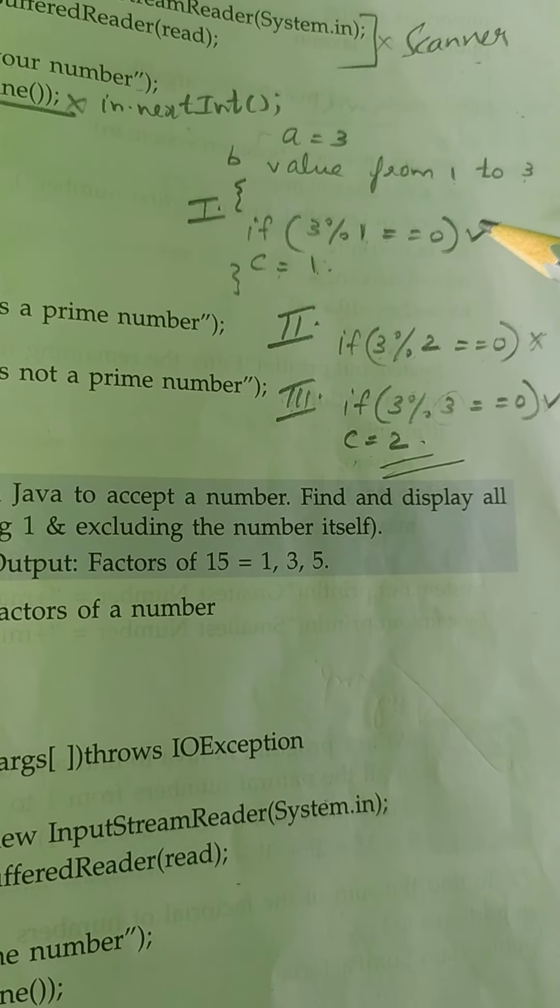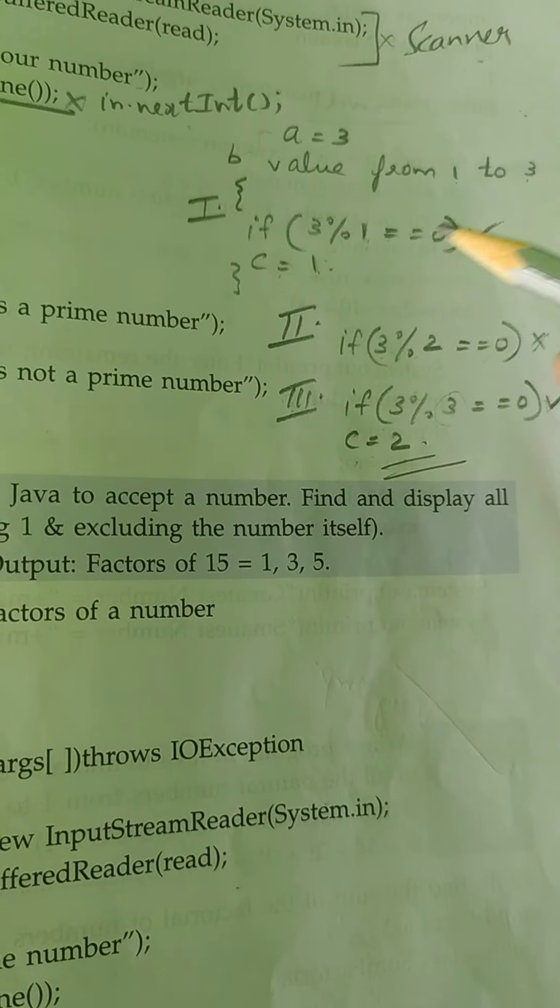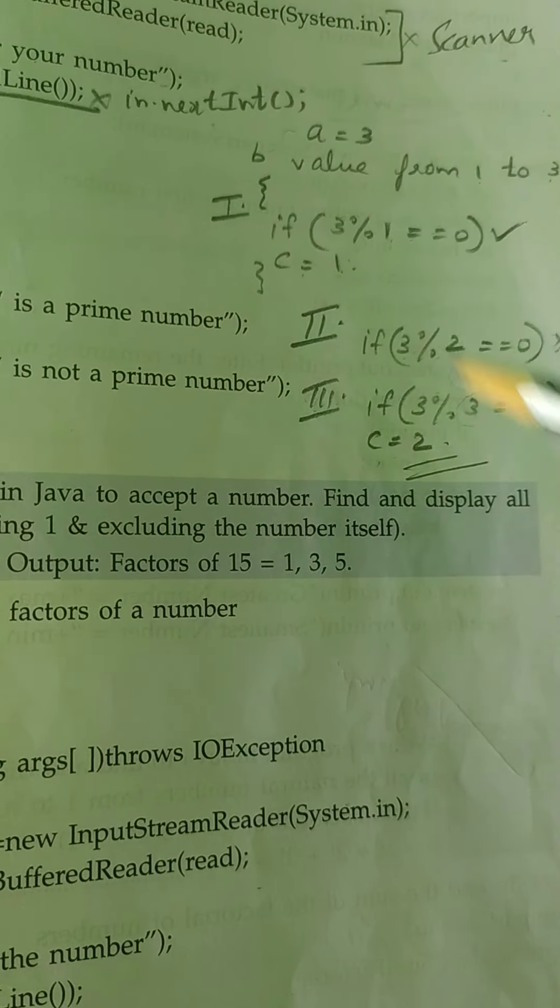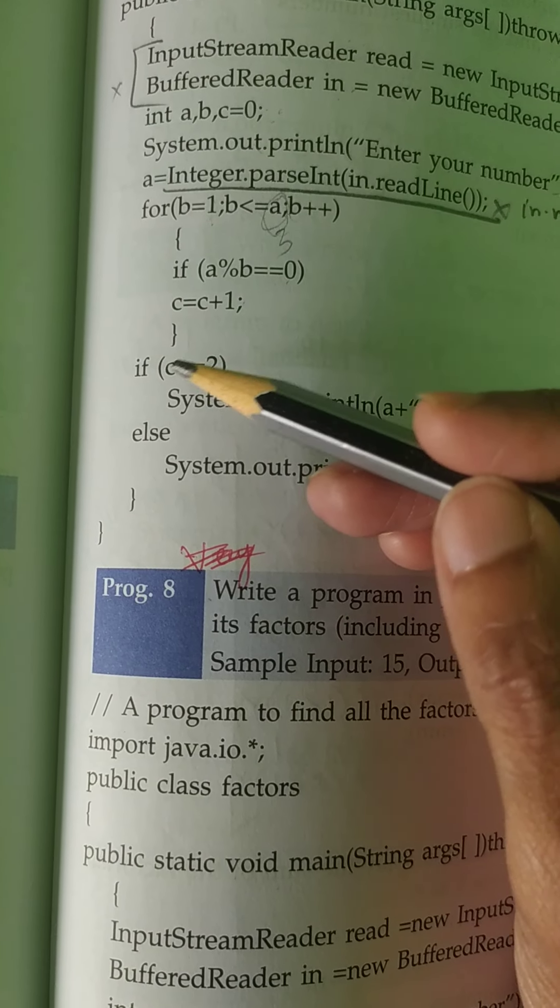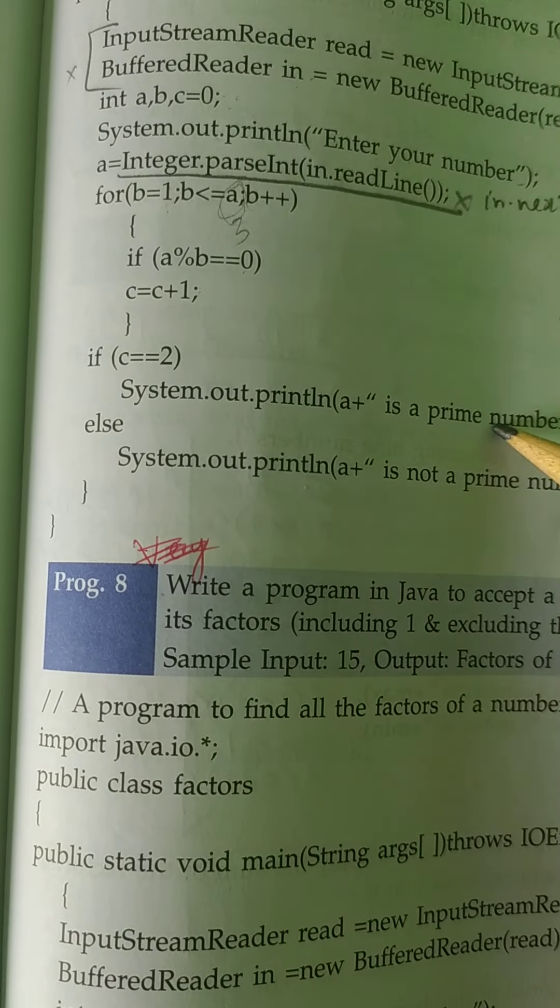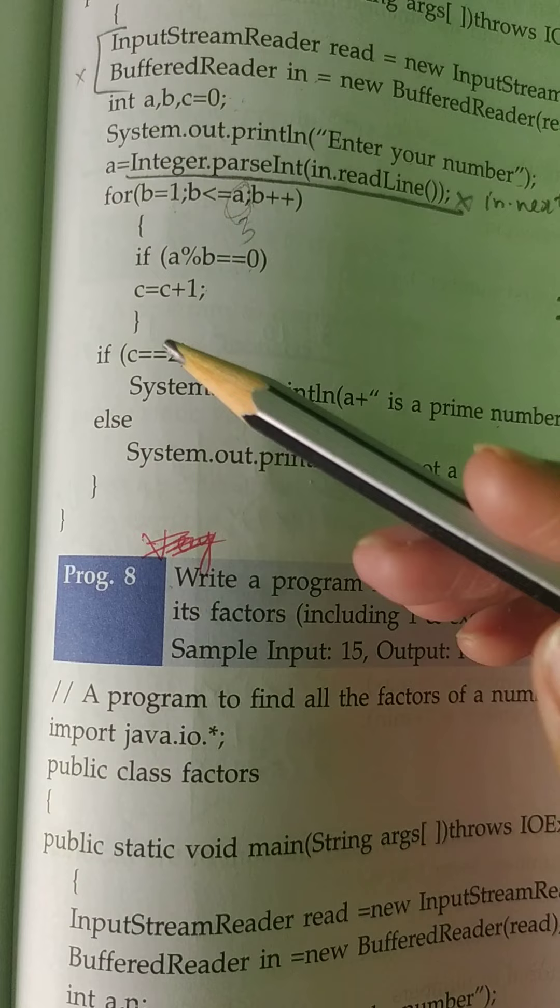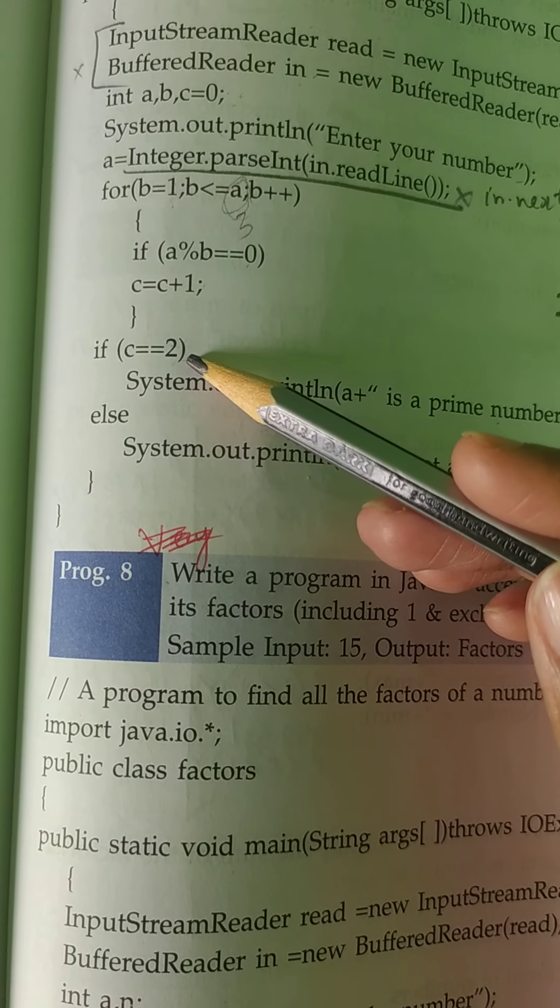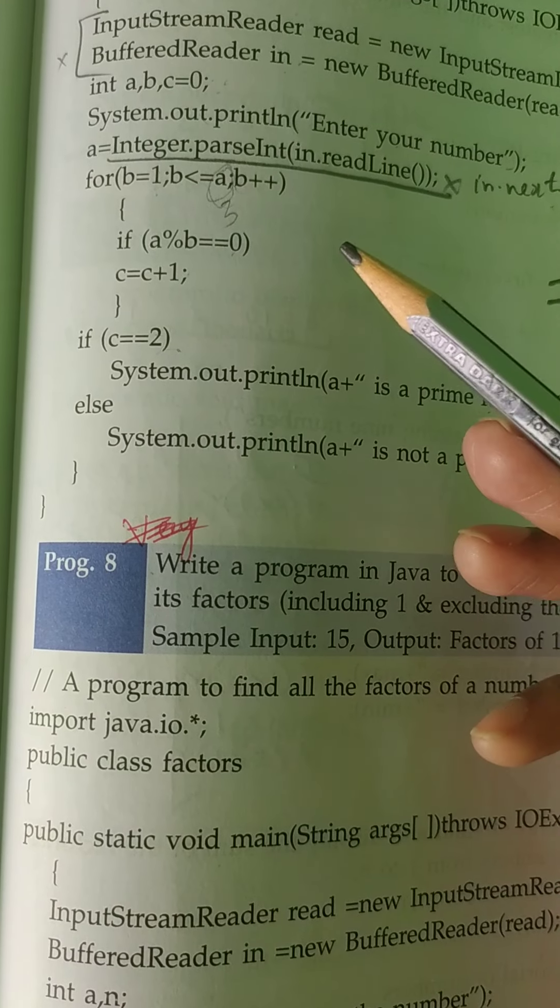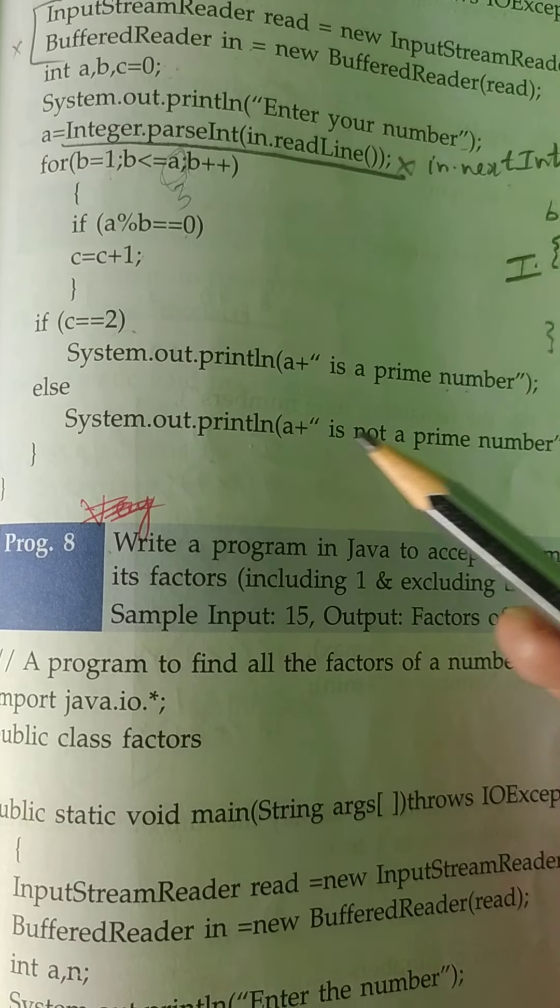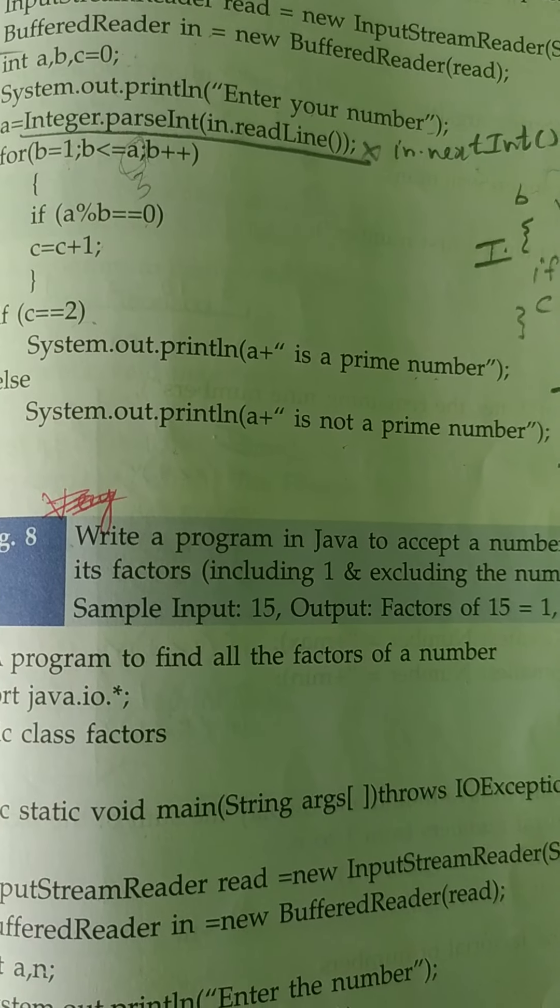From one to three you check the divisibility. Whenever you get the condition true, you have to count the variable. If the counter variable becomes two, that is a prime number. If that number has two factors, it's a prime number. If more than two factors, it is not a prime number.